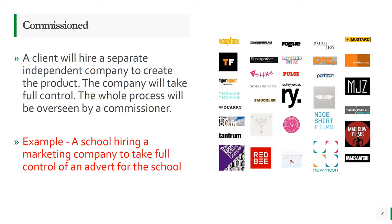The commissioned client brief is when the client hires a separate independent company to create the full product. They don't say exactly what they want or need — they leave it down to somebody else to decide. For example, you might need an advert for your school but you're not sure what you want. You give them the basic information — the name of the school, maybe a colour scheme — but everything else is completely down to them. You're commissioning a different company to take full control.